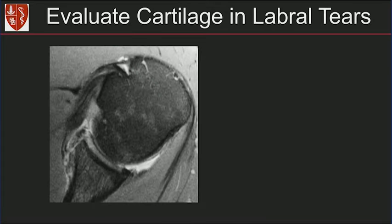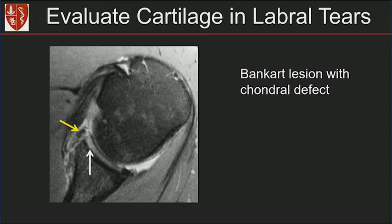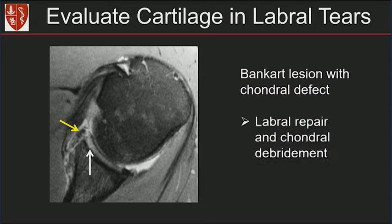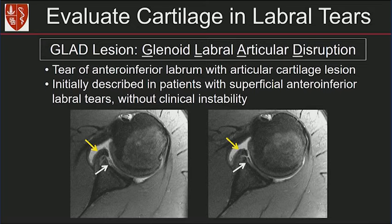Remember to evaluate cartilage adjacent to labral tears. When we see these labral tears, look at the cartilage right next to it. Here's a Bankart lesion with fissuring of the cartilage adjacent to it — this patient will get a labral repair as well as chondral debridement. This has been described as a GLAD lesion — glenoid labral articular disruption. You don't have to use these names, but it's a reminder to look at the cartilage. These cartilage abnormalities occur with both instability and non-instability patients, so just report any cartilage defects you see adjacent to labral tears.